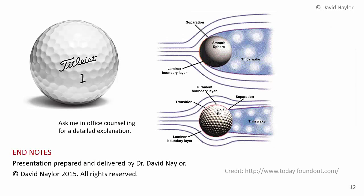This same principle explains why golf balls have dimples. A smooth sphere produces early separation and a large turbulent wake with a large low-pressure region on the back. Dimples trigger turbulence in the boundary layer, delaying separation and producing a much smaller wake, which significantly reduces drag. This is a fascinating phenomenon and that completes this video.